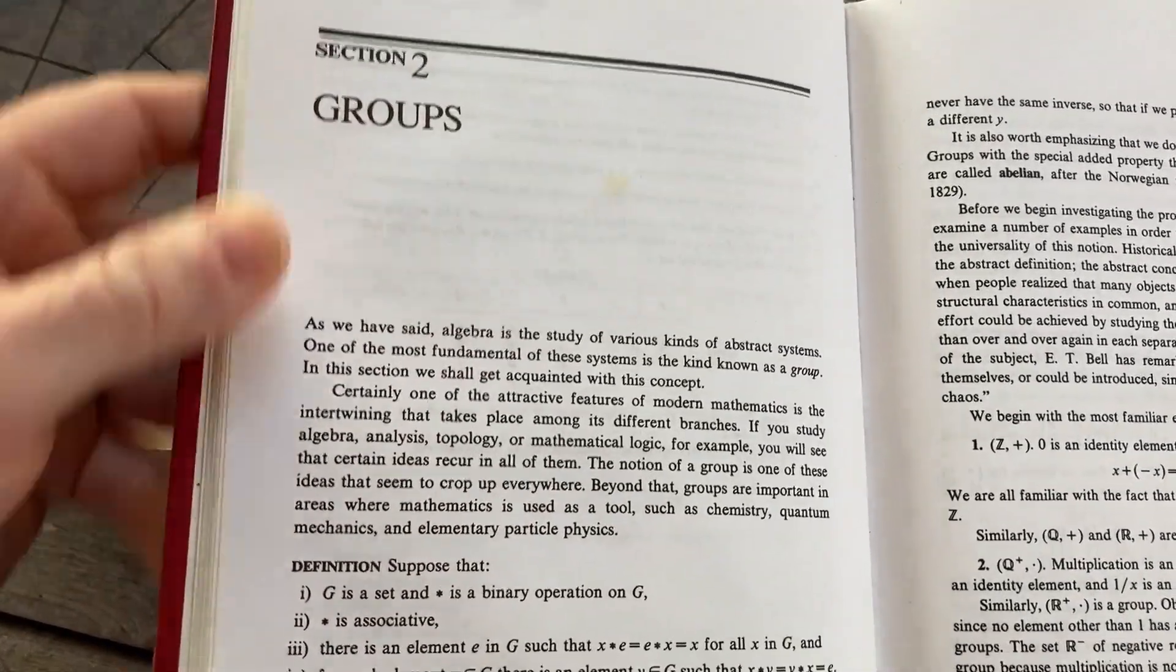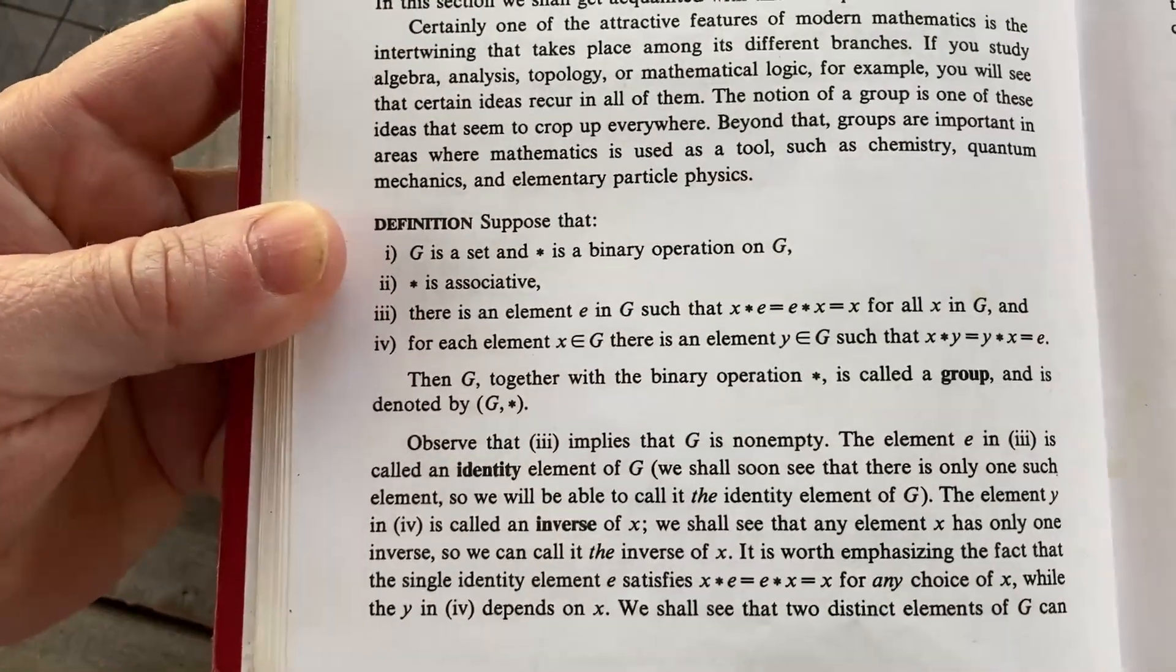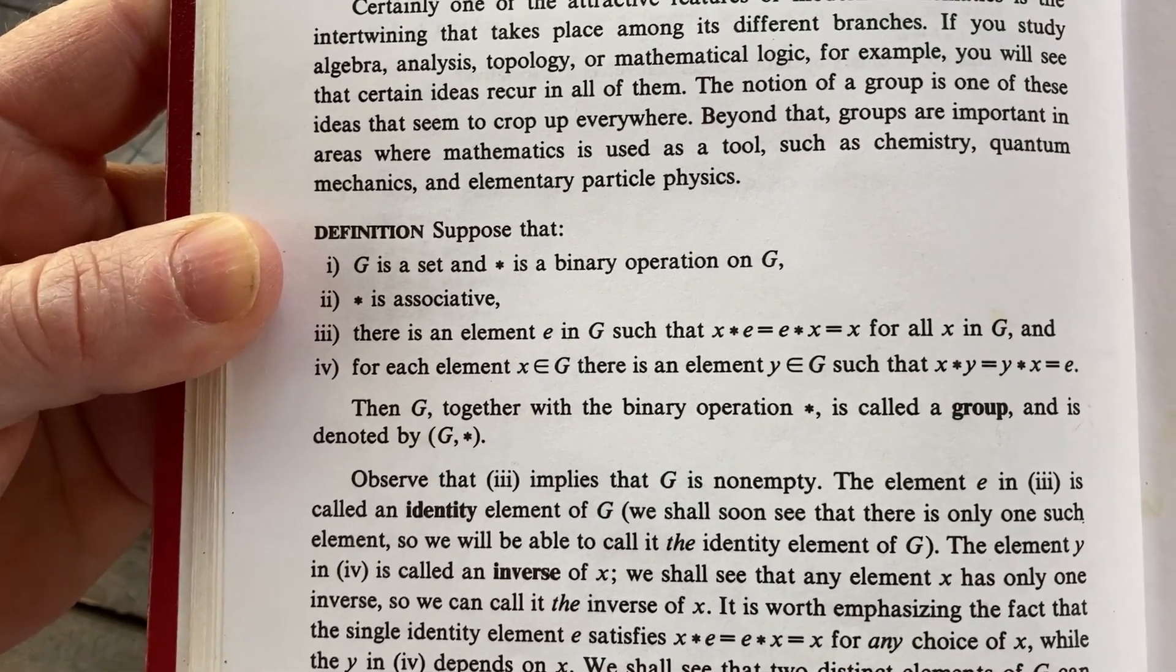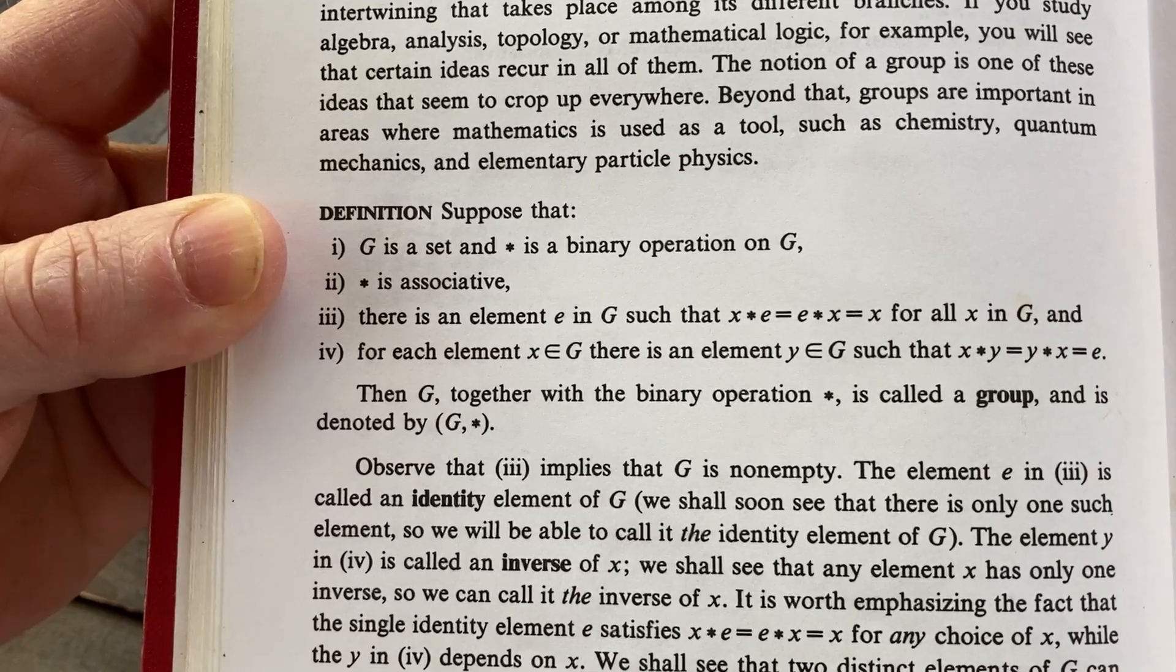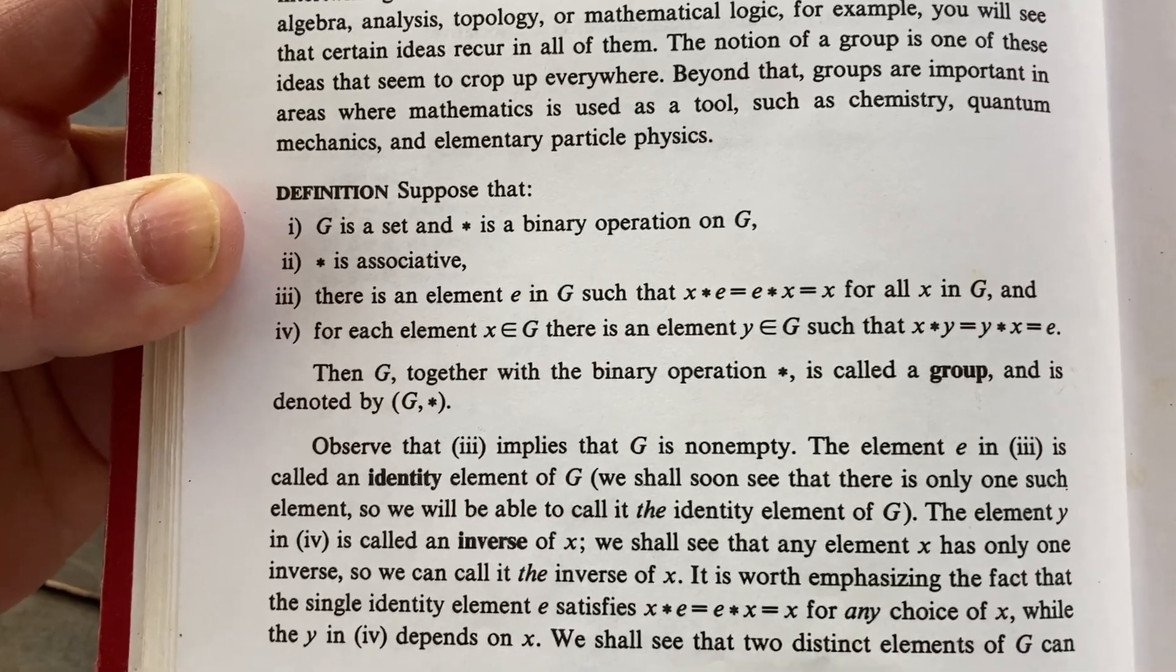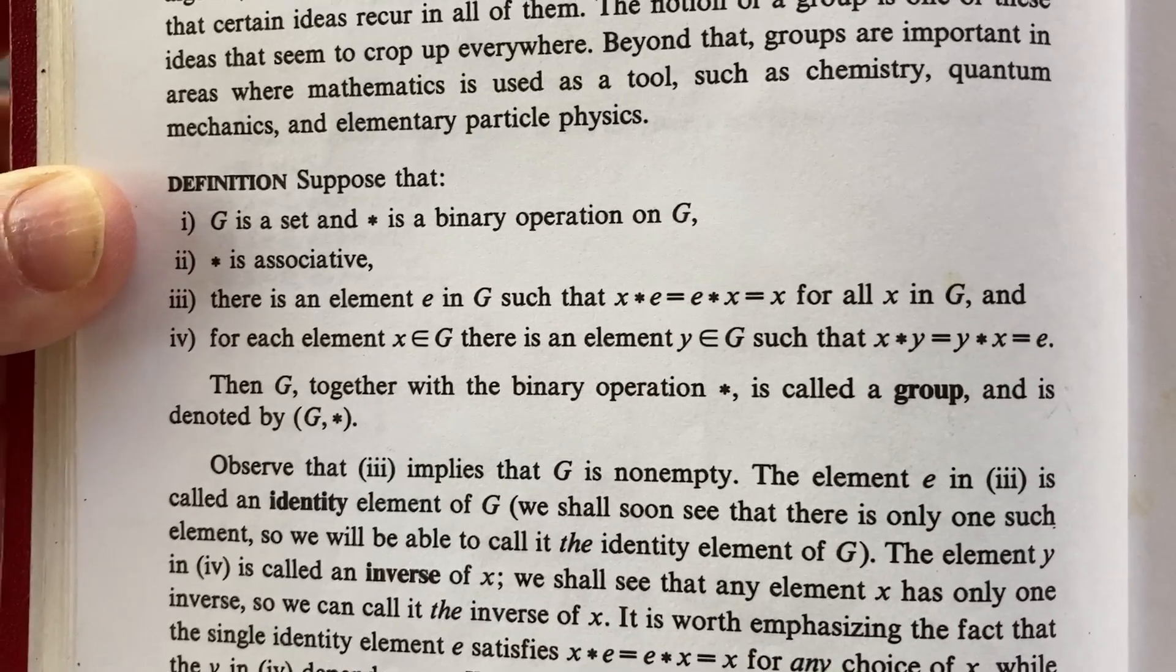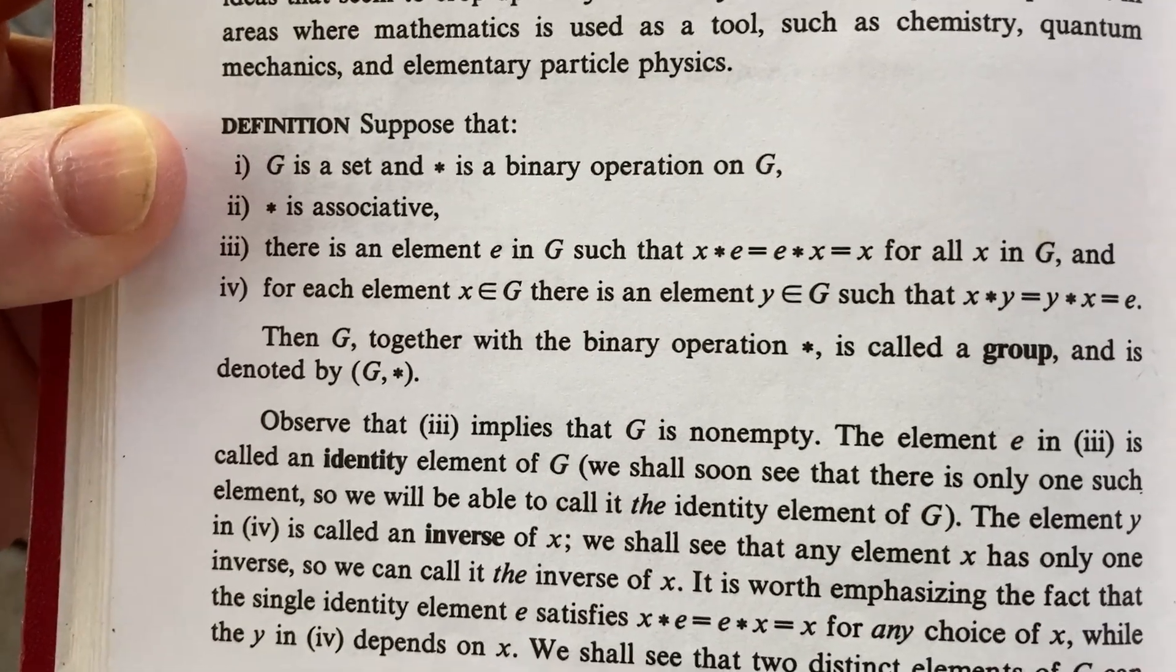Finally in section two we get to groups. Here he defines a group. It says suppose that G is a set and star is a binary operation on G. Star is associative. There is an element e in G such that x star e equals e star x equals x for all x in G. That's the identity element.